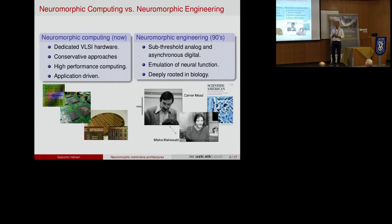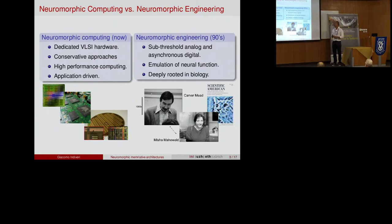Neuromorphic computing — the term is very popular today, it's gotten a lot of press. There are very big projects: the Human Brain Project, the SpiNNaker DARPA initiative from a few years ago. It's mainly related to the hardware implementation of brain-inspired computing platforms. It's dedicated hardware using conservative approaches — either digital, for example using ARM cores, or above-threshold analog, or fully digital as in IBM's TrueNorth. The goal of these more recent neuromorphic computing approaches is high-performance computing: building fast platforms for neuroscientists to simulate neural networks, or for doing inference in neural networks.